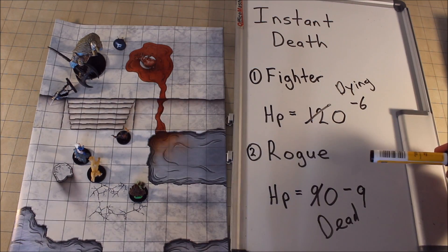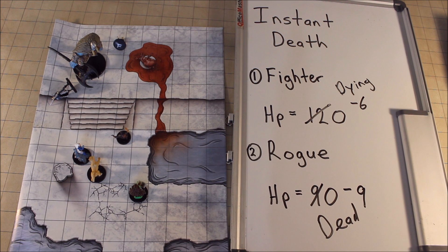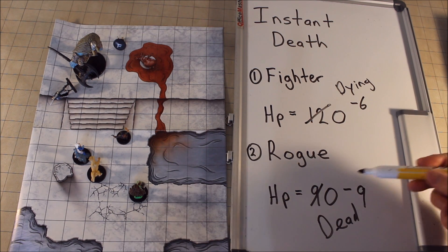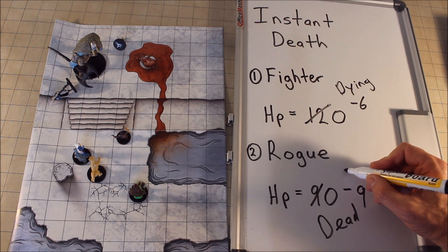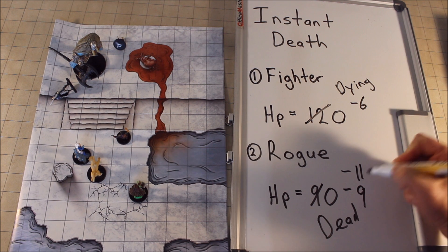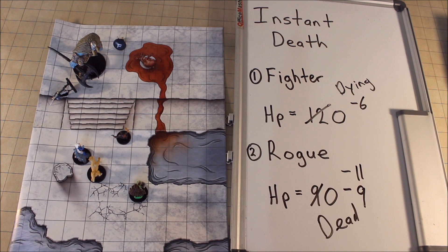Going back to the rogue — if the rogue had suffered 20 points of damage, you can see that 20 would reduce it to zero and put it into negatives of negative 11, which is equal to or greater than the maximum hit points of the rogue in negatives. Therefore the character dies.